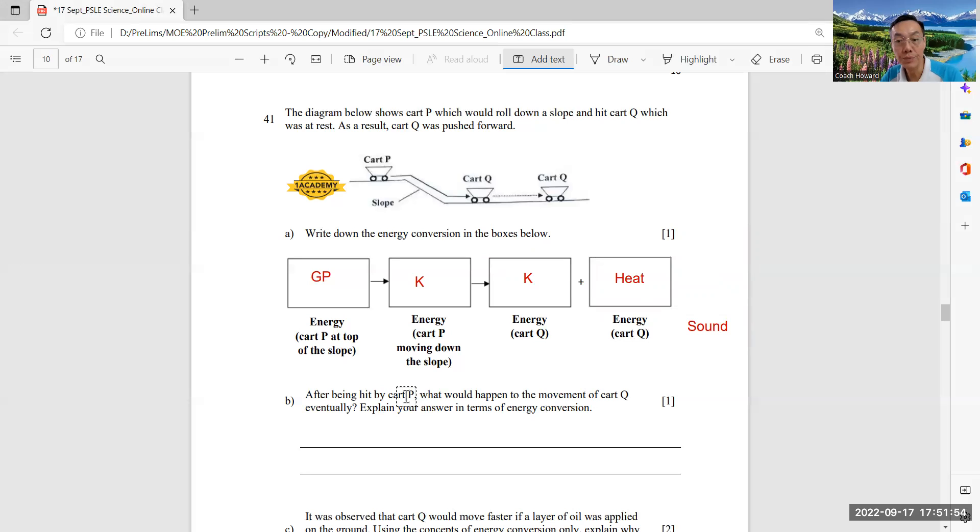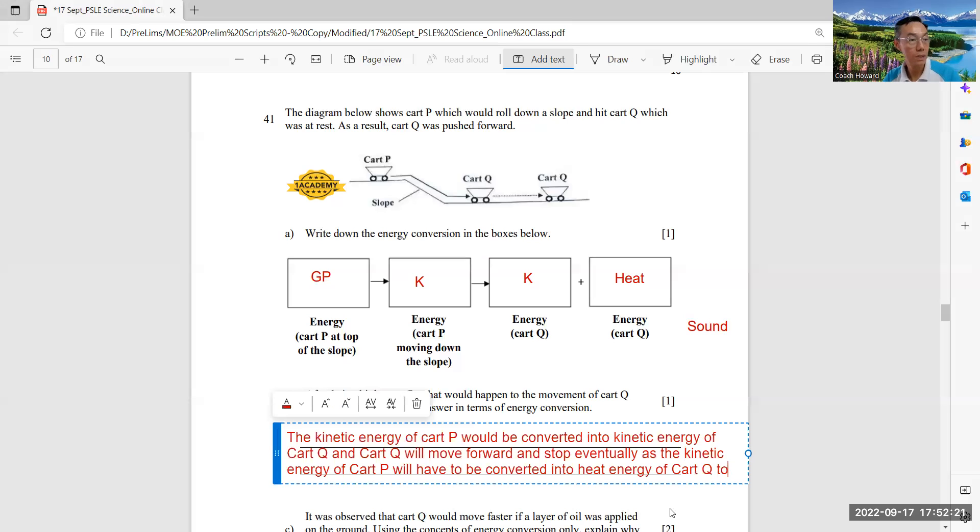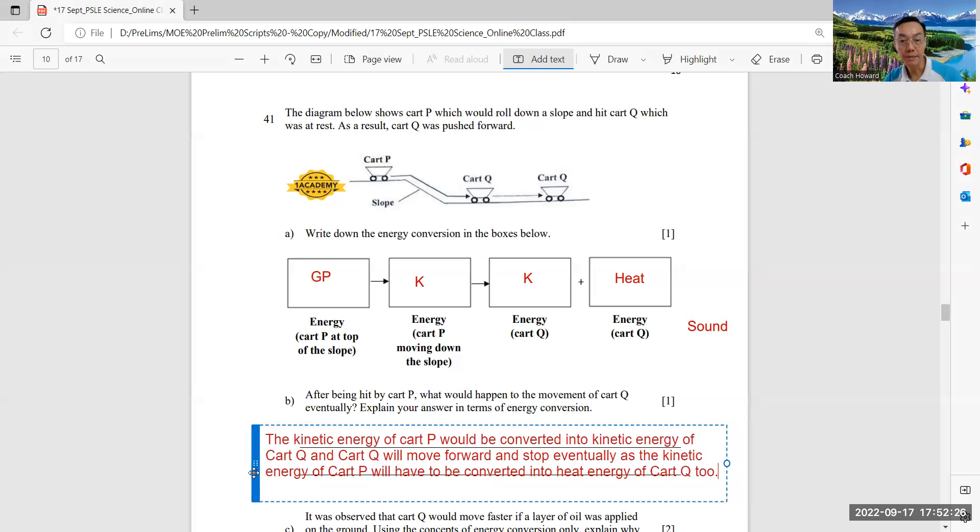Okay, so after being hit by cart P, what will happen to the movement of cart Q eventually? And you had explained in terms of energy conversion. So it should say that kinetic energy of cart P will be converted to kinetic energy of cart Q, and cart Q will move forward and eventually stop as the kinetic energy of cart P will be converted into heat energy. Okay, so I place the answer here.